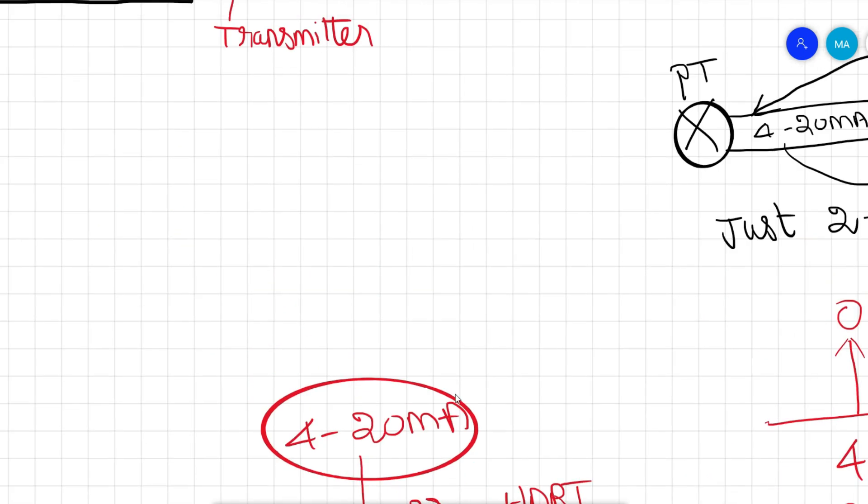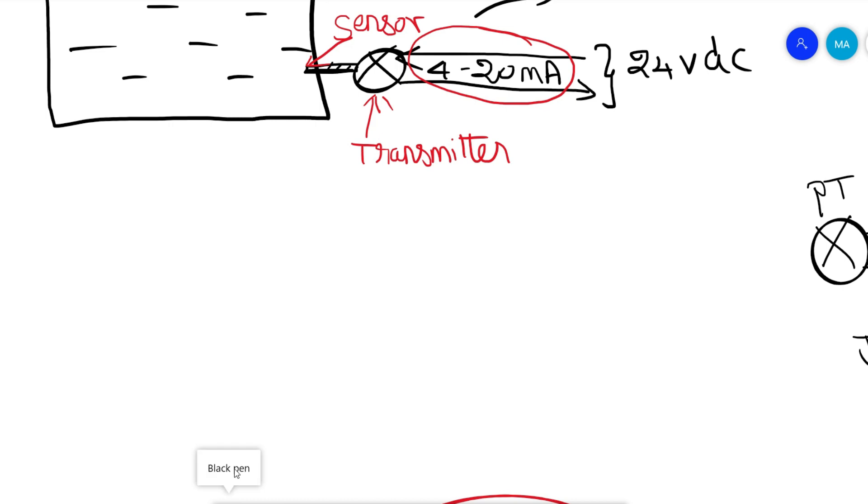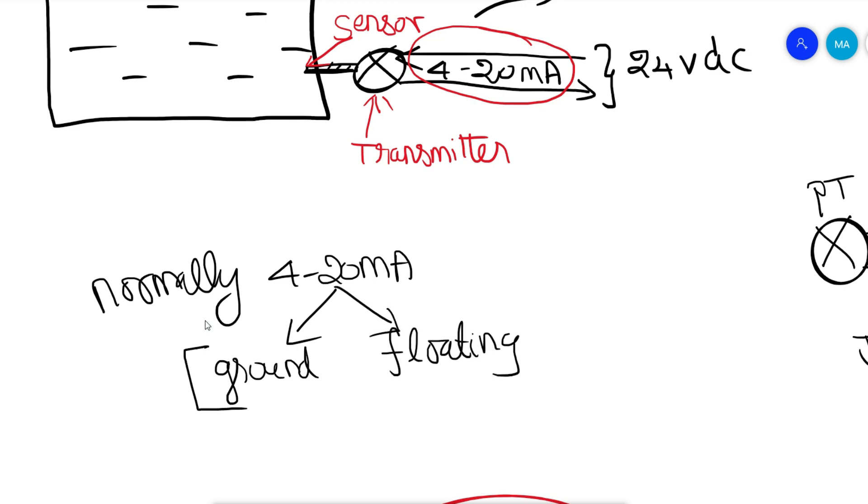Finally, two-wire 4-20 milliamps commercial instruments are isolated and floating, so ground loops and their associated errors and faults are relatively rare. This is the basic reason for 4-20 milliamps signal, which is widely and globally used in all process industries.